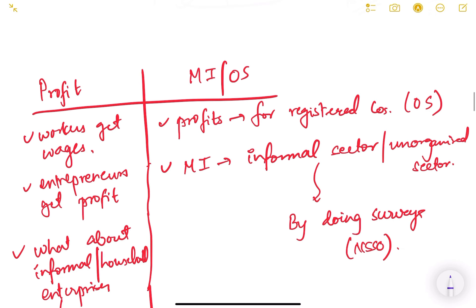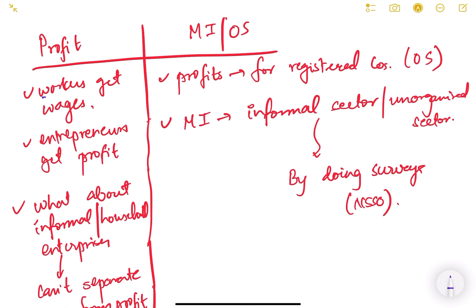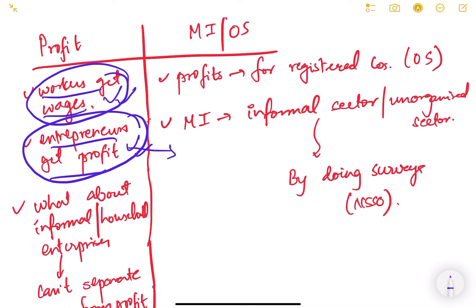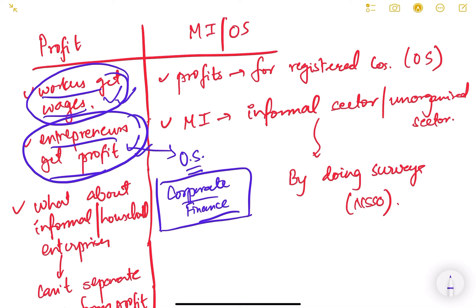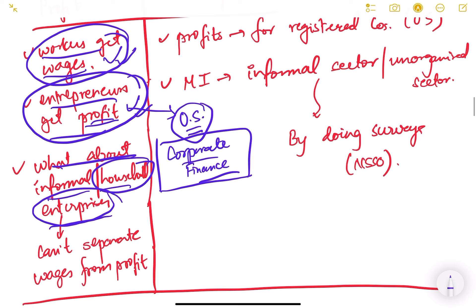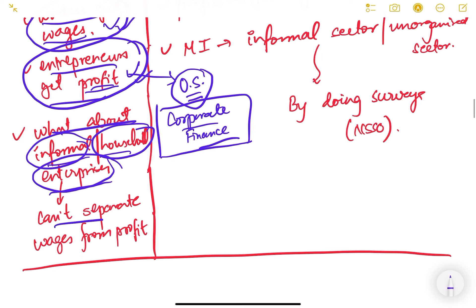That was for the formal sector. But what about the informal sector — household enterprises? There are women making papad, MSMEs in the informal sector, small shopkeepers, chaiwalas, dukanwalas. For such people, we cannot separate wages from profit. For example, if a husband, wife, and son are all running a shop, we can't distinguish how much is salary and how much is profit because nobody pays salary to themselves in the informal sector.